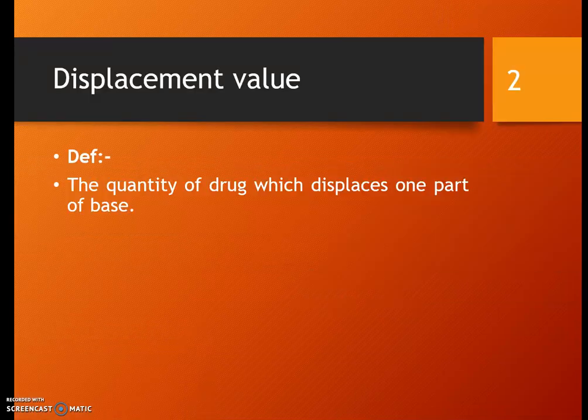Displacement value is defined as the quantity of drug that displaces one part of base. This means the amount of drug required to displace one part — for example, if you are making 10 suppositories and you add a certain quantity of drug that displaces one gram, that would be termed as one part of your base. So displacement value is the quantity of drug which displaces one part of base.